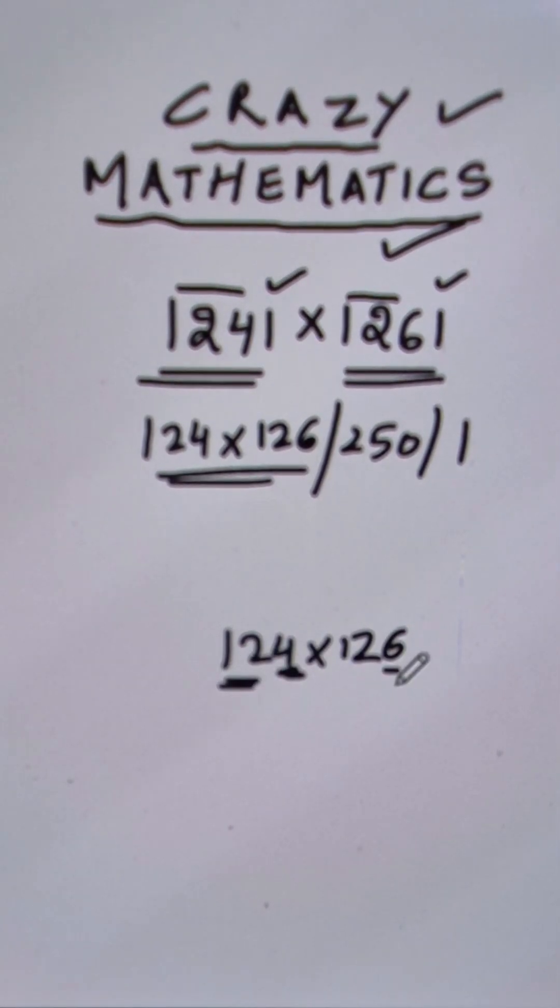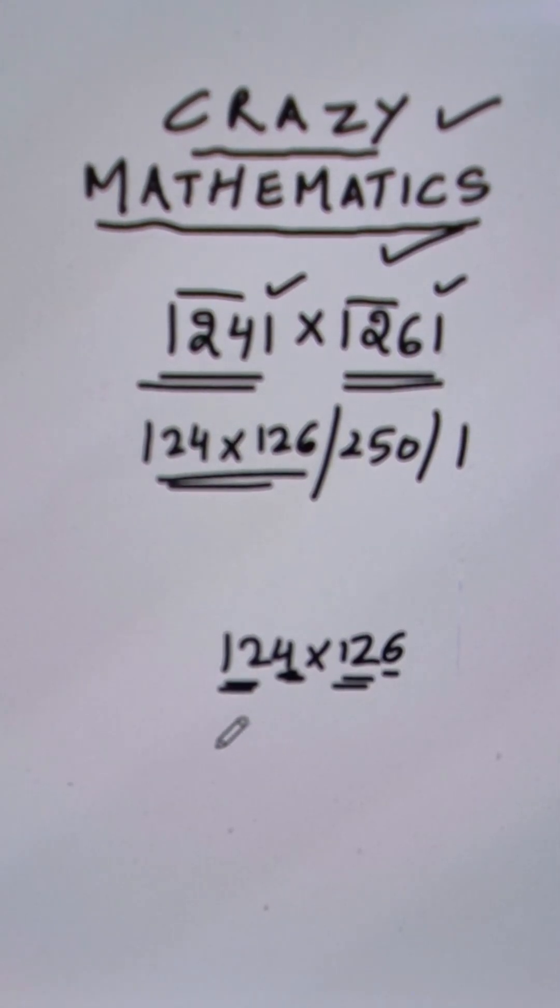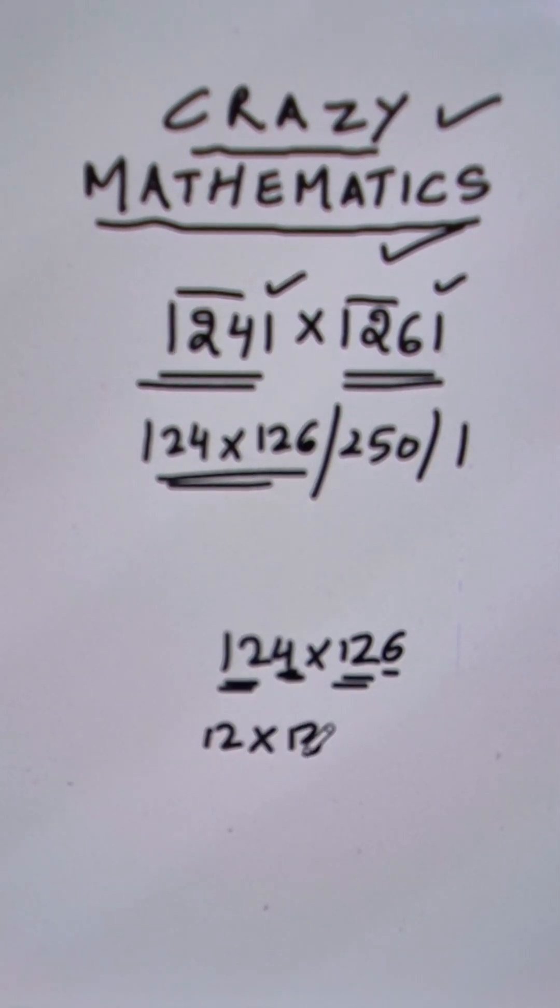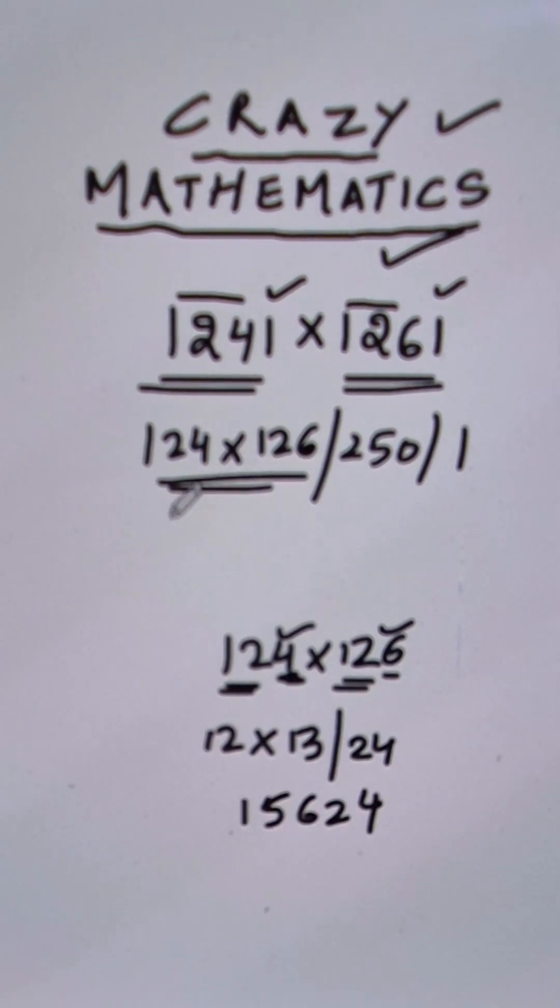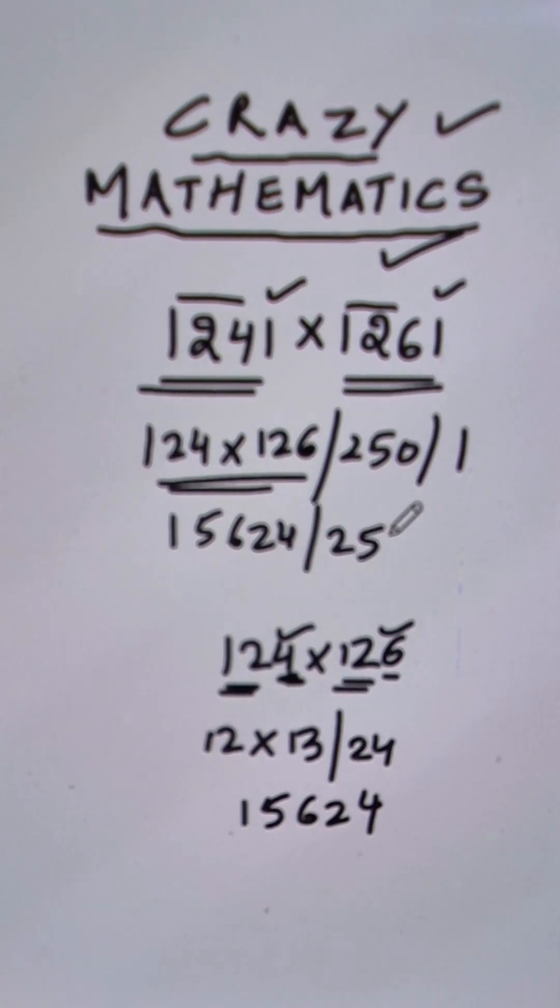So the remaining part, 12, which is same in both the numbers, 12 times the next number 13, followed by 4 times 6, which is 24, will give you 15624. And when you put 15624 here, followed by a 250 and a 1, you will get the final answer for the product.